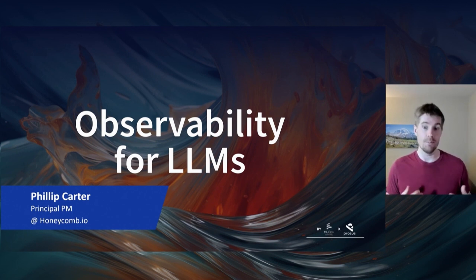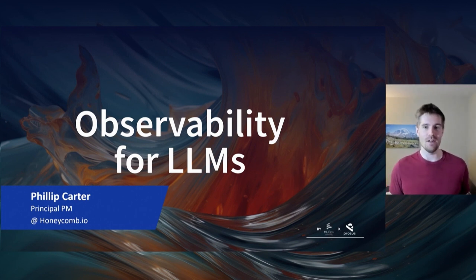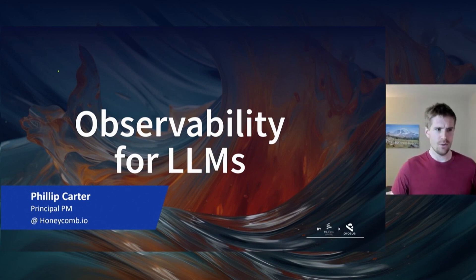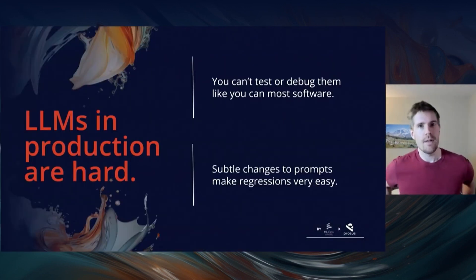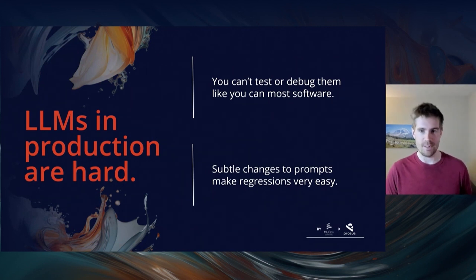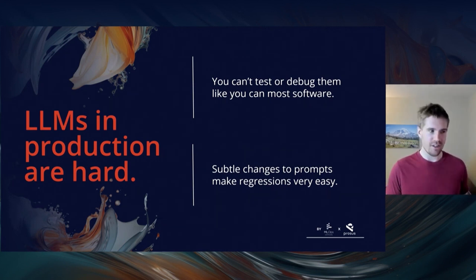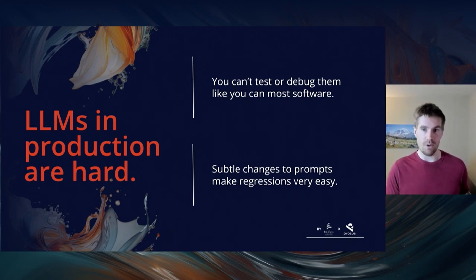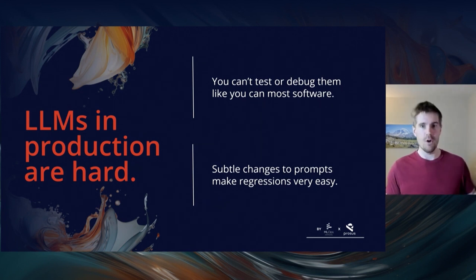I want to talk about observability for LLMs, because I believe — not just because I work for an observability company — that observability is part of the toolkit you need to make LLMs reliable over time. Anyone who has built with LLMs over the past year has probably understood it's actually not too hard to take something to market. If you give a product engineering team about a month and API keys to OpenAI, they can probably get something out there that solves real problems and creates a good marketing moment. But the problem is: pretty good is not production ready.